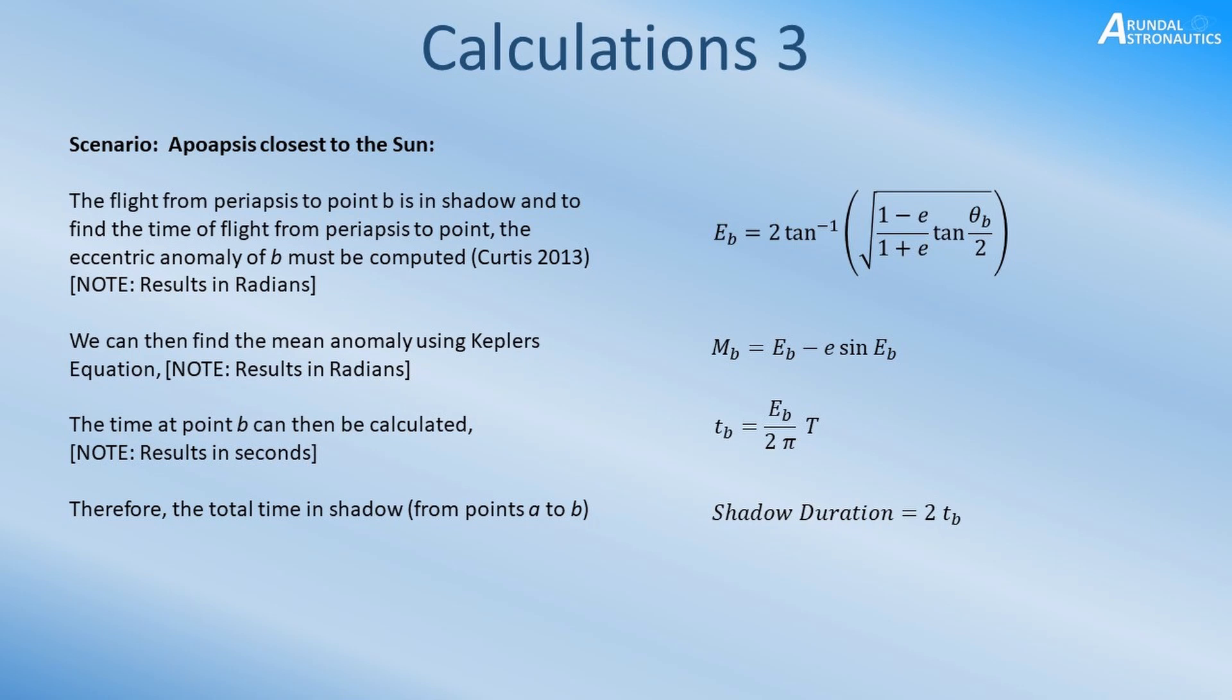This is how we can look at the apoapsis closest to the sun scenario. Now if we were looking at the periapsis close to the sun it still follows the same algorithm but instead of theta B we would then look at theta C and therefore the associated anomalies with that.